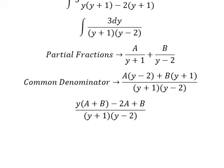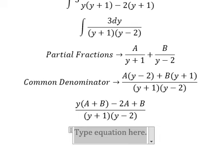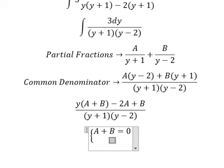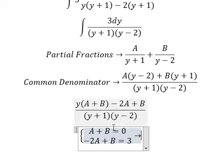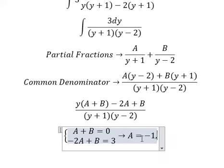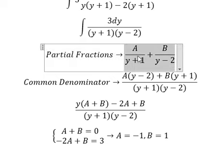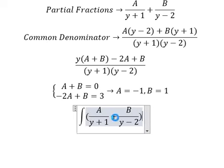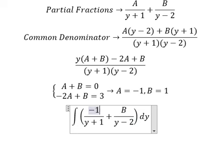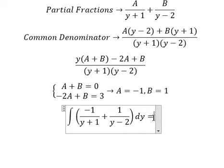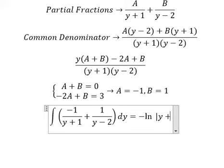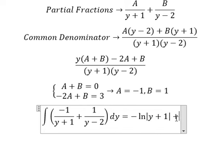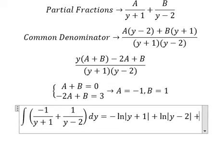Now we create the system of equations and find the solutions for A and B. So A equals negative 1 and B equals 1. We substitute these in: we have negative 1 over y plus 1 and positive 1 over y minus 2. The integration gives us negative ln of the absolute value of y plus 1, plus ln of the absolute value of y minus 2, plus C.